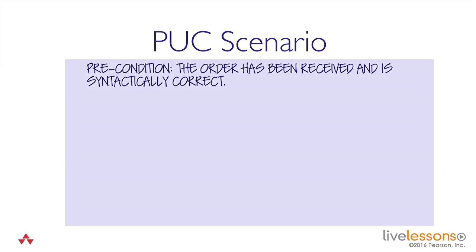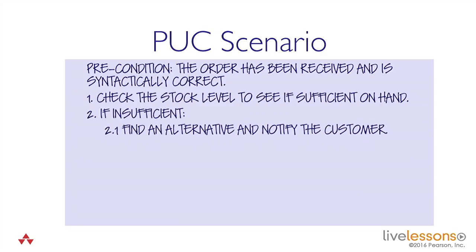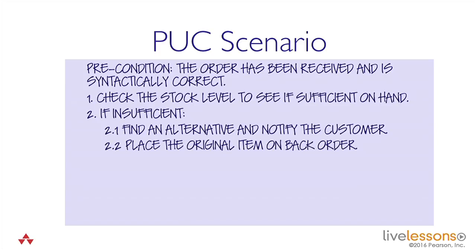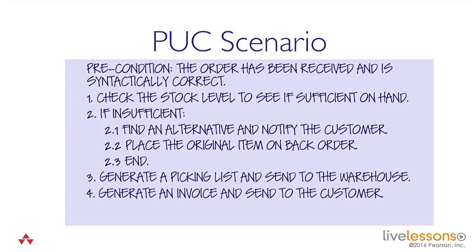Here I'm saying I've got a precondition for this product use case: the order has been received and is syntactically correct. Step one: check the stock level to see if sufficient on hand. Step two: if it's insufficient, find an alternative and notify the customer. Place the original order on back order — and that's the end of my 'if insufficient' branch. Otherwise: generate a picking list, send that to the warehouse, and generate an invoice and send it to the customer. And that's the end of my scenario.